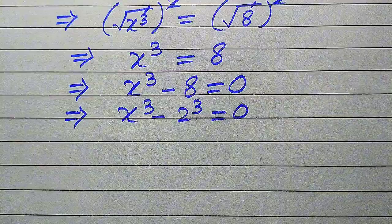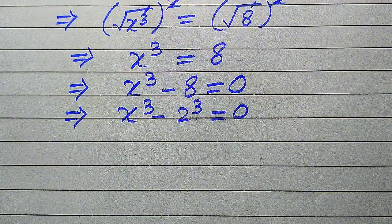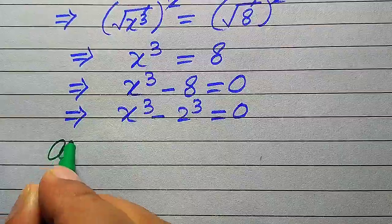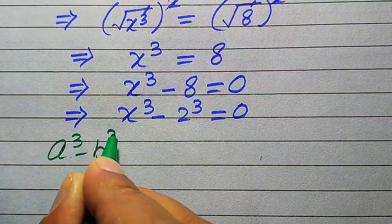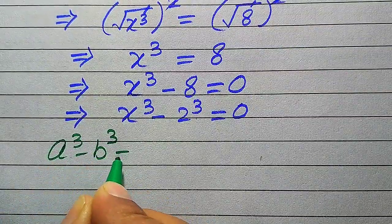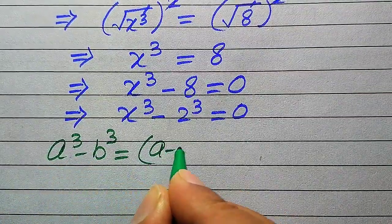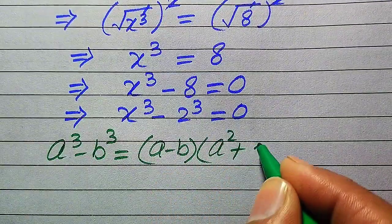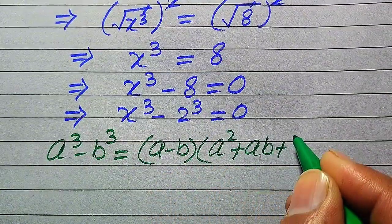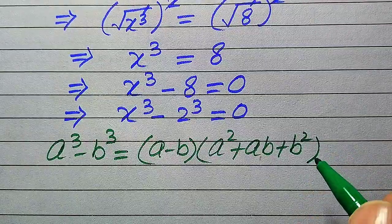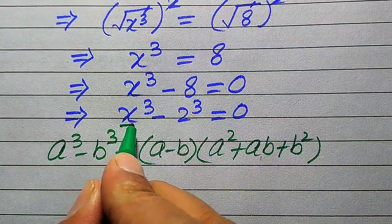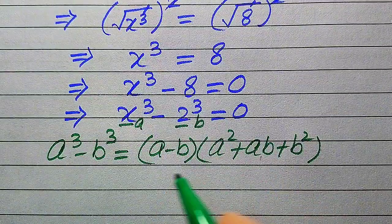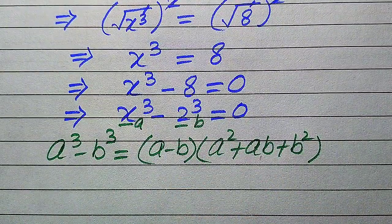In the next step, we use the difference of cubes formula: a cubed minus b cubed equals (a minus b)(a squared plus ab plus b squared). Here the base of the first term is our a, and the base of the second term is our b.